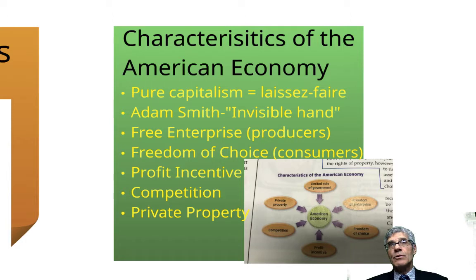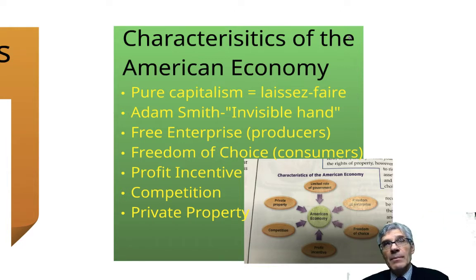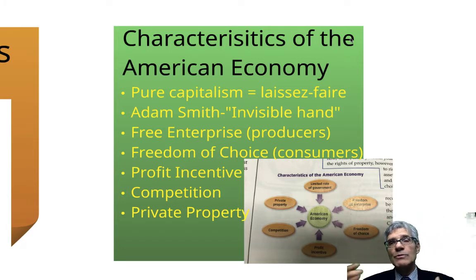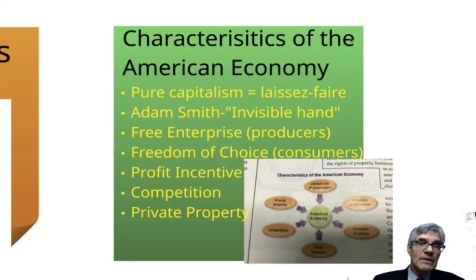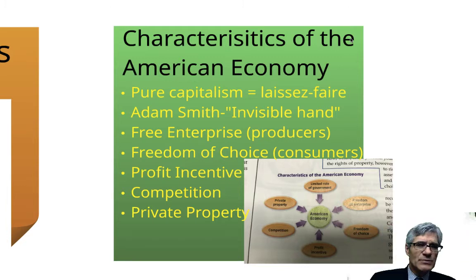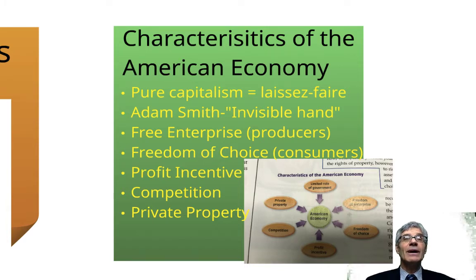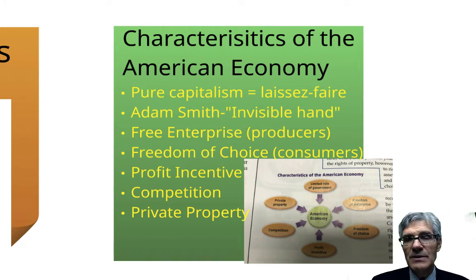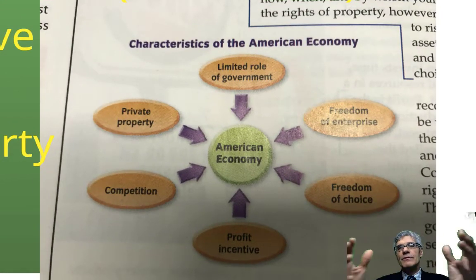In a free enterprise system like our American economy, producers can produce what they want — suits, ties, shirts, a computer mouse. As a consumer you have freedom of choice to buy or not buy what you want. That interplay between producers and consumers drives our economy. The profit incentive means: if I spend $50 on materials, $25 on labor, putting $75 in, I sell it for $100 and make $25 profit. Maybe I sell for $200 and make $125 profit — but competition kicks in. Someone else sells it for $150, so I have to come down on price. And then there's private property.